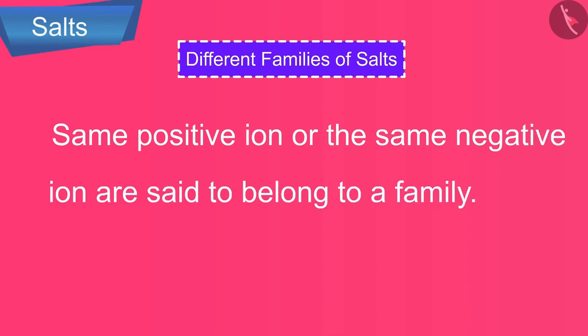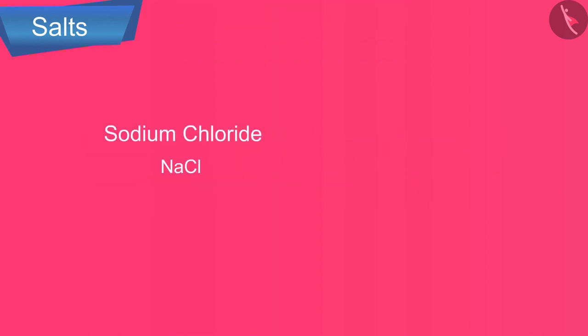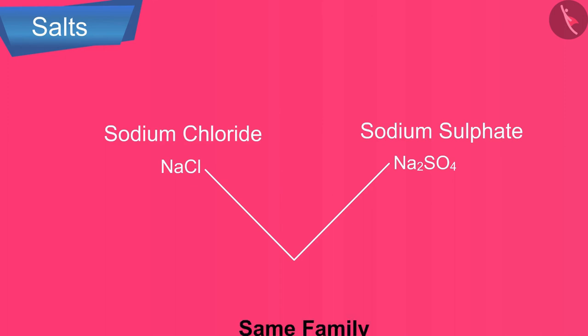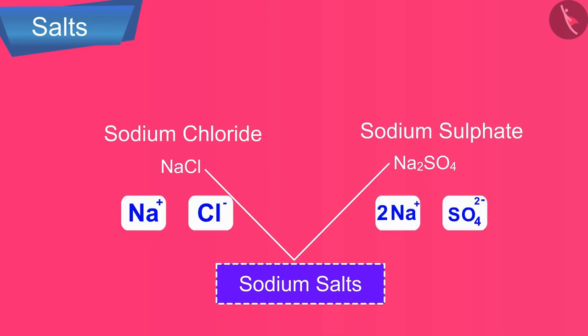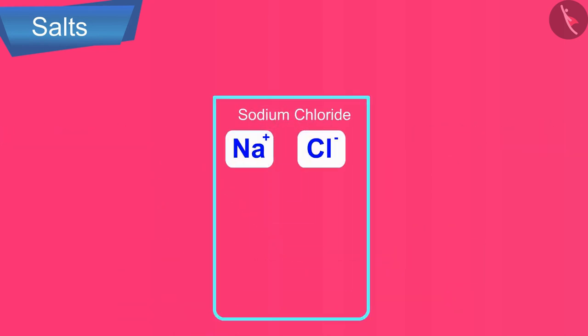For example, sodium chloride and sodium sulfate both belong to the same family of salts called sodium salts, because they both contain the same positively charged ions, sodium ions Na+.